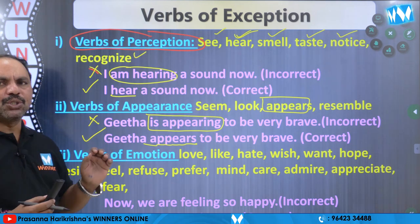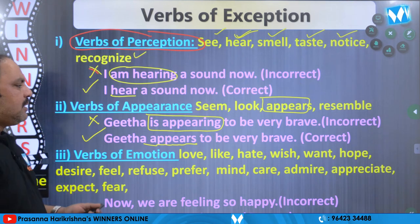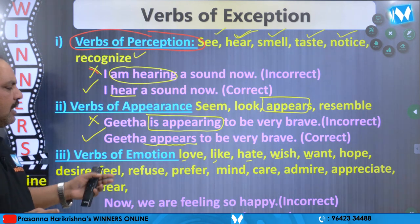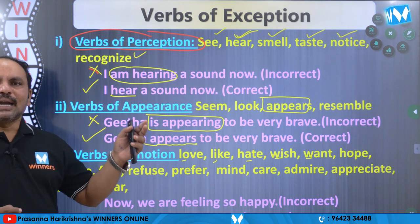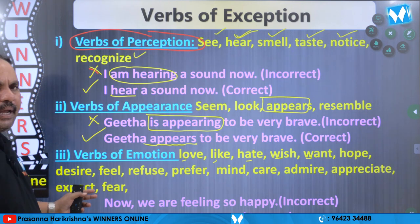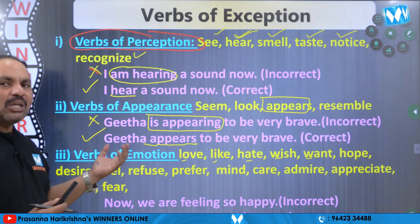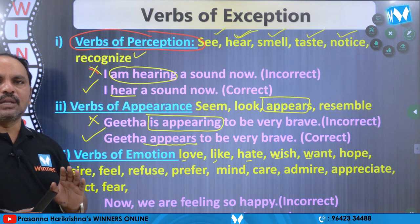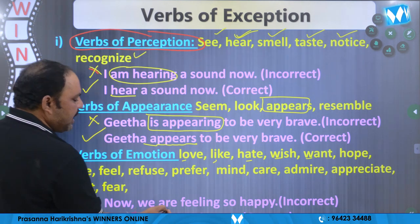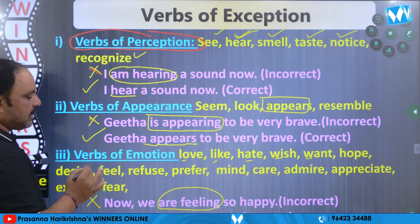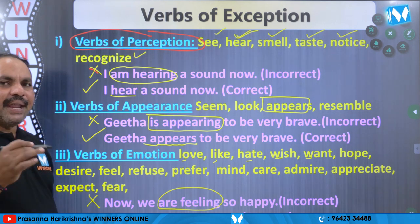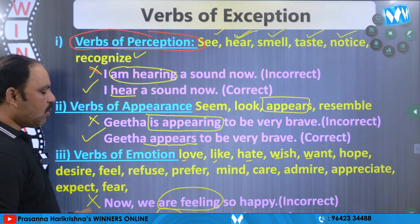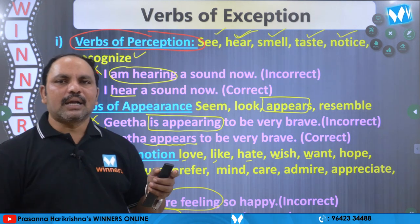Third: verbs of emotion — emotion ki sammandhinche verbs: love, like, hate, wish, want, hope, desire, feel, refuse, prefer, mind, care, admire, appreciate, expect, and fear. E padam ni verbs of emotion antaamu. Viti ni kuda present continuous lo vaadamu, simple present tense lo vaadatamu. Udaharanakki: 'Now we are feeling so happy' — indulo 'are feeling' ane di wrong expression. Simple present tense lo cheppaali, V1 upayoginchukoni: Now we feel so happy. This is the correct answer.